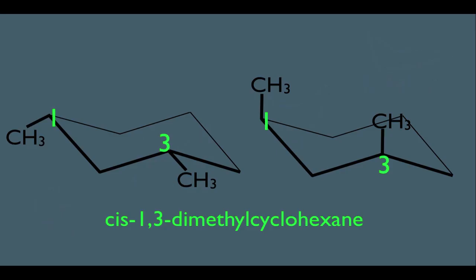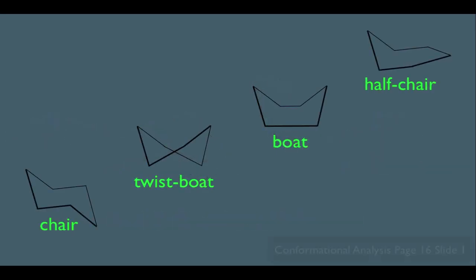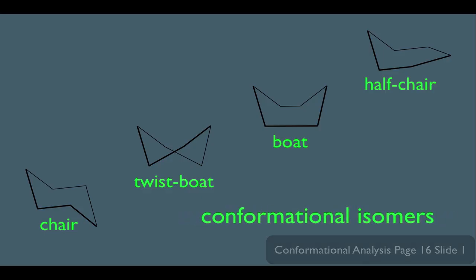We also saw that cyclohexane comes in other varieties: chair, twist-boat, boat, and half-chair. All of these are conformational isomers to each other.